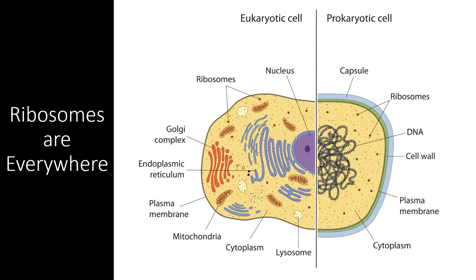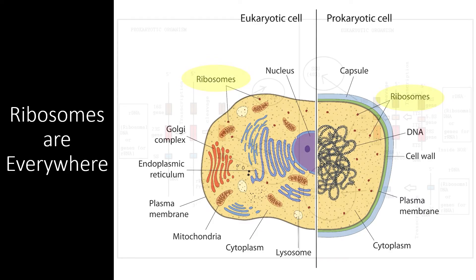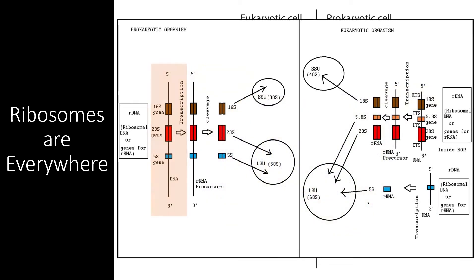Aside from DNA, ribosomes are the only cellular components that are present in both prokaryotic cells and eukaryotic cells. In fact, when we look at the DNA of a bacteria and a human, we find very similar sequences that code for ribosome proteins. Both ribosomes also have two subunits, though eukaryotic ribosomes are slightly larger than prokaryotic ribosomes. This suggests that ribosomes are one of the most ancient cellular components, and adds evidence that all life on Earth originated from a common ancestor.